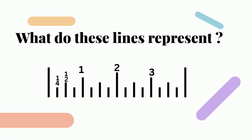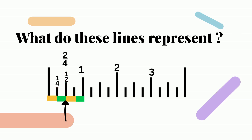Then look at the one-fourth marks. Notice that they divide the inch into four equal parts. The first mark is one-fourth, the second is two-fourths — which reduces to one-half — then three-fourths, and four-fourths which equals one.